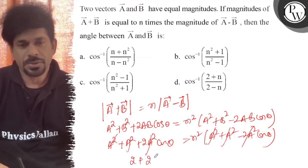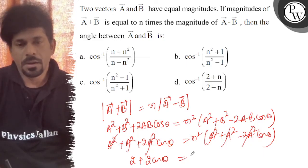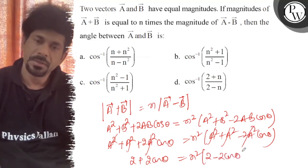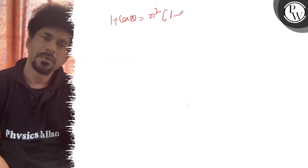To idhar kya bachega? 2 plus 2 cos theta. Udhar bachega aapka n square 2 minus 2 cos theta. To sare 2 se 2 bhi chale jayenge. To idhar bachega 1 plus cos theta is equal to n square 1 minus cos theta.